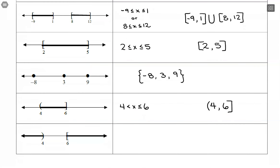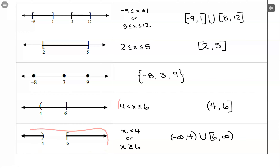Our last example goes from negative infinity up to 4, not including 4 — so x < 4 — and also from 6 off to positive infinity, so x ≥ 6. In interval notation, we have two intervals: (−∞, 4) union [6, +∞). As I mentioned, we'll focus on interval notation throughout, though working with the inequality form first can be a helpful visual step. The only time we won't use interval notation is when we have just a discrete set of numbers.